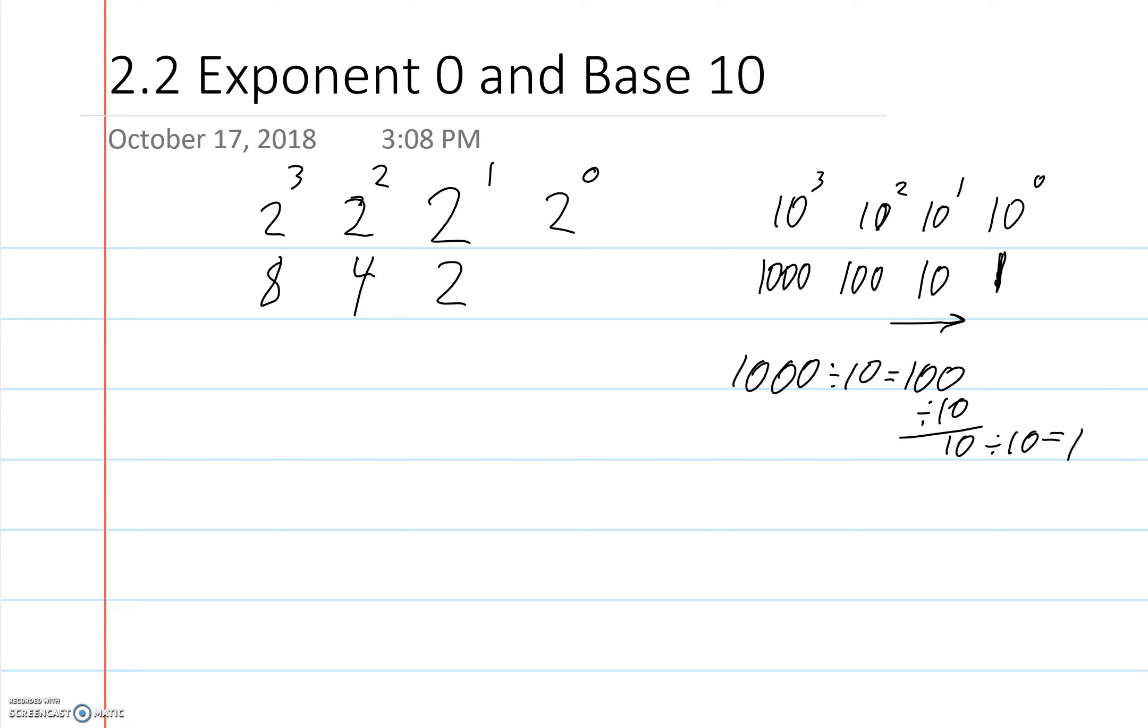This explains why this answer is 1. And the same thing fits over here. If you get 8, divide by 2, what do you get? You get 4. Take 4, divide by 2, you get 2. Take 2, divide by 2, you get 1. So this is the exponent 0. It's showing that anything to the exponent 0... 32 to the 0, what is that? It's still 1. Anything to the exponent 0 is 1. That's simply the answer.